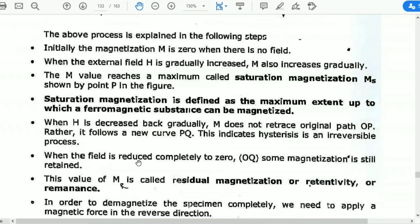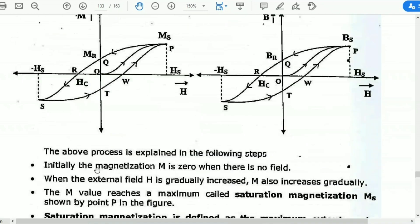When the field is reduced completely to 0 — that means at point OQ — some magnetization is still retained.